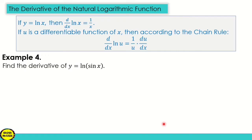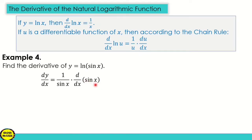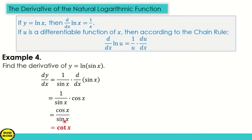Example number 4: find the derivative of y is equal to ln of the quantity sine x. Our u is sine x. So that is 1 over sine x times the derivative of sine x. The derivative of sine x is cosine x. So we get cosine x over sine x. From trigonometric identities, cosine over sine is cotangent x. So the final answer is cotangent x.